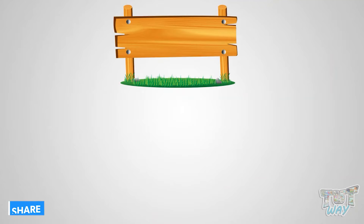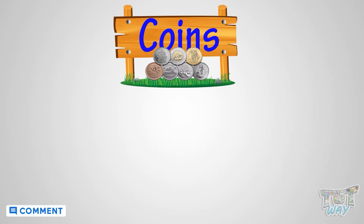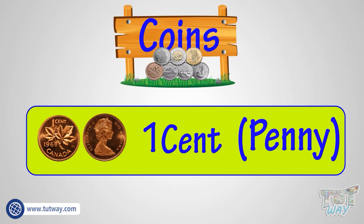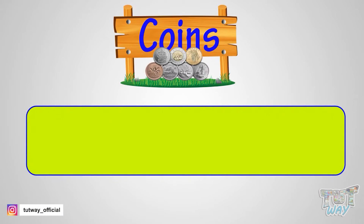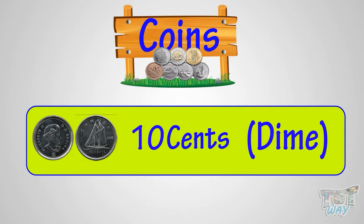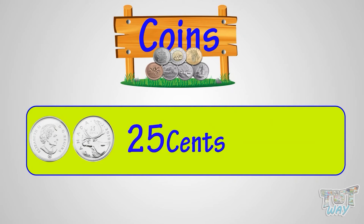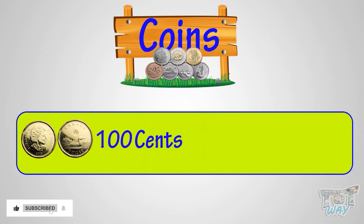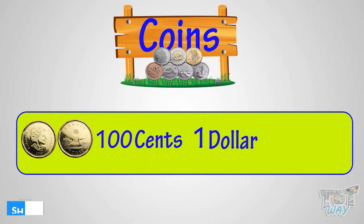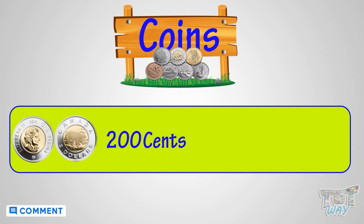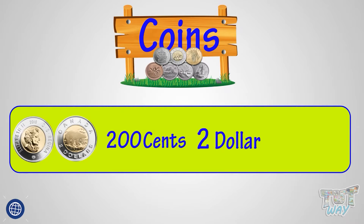Now, let's first revise our coins. This is one cent — this is our penny. This is nickel. These are ten cents — we call it our dime. These are twenty-five cents — we call them a quarter. These are one hundred cents or one dollar — this is our loonie. These are two hundred cents or two dollars — we call it toonie.